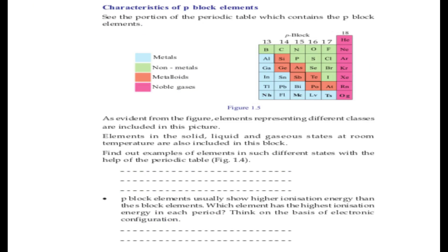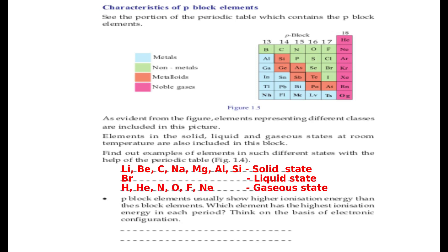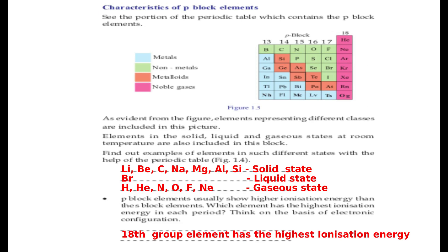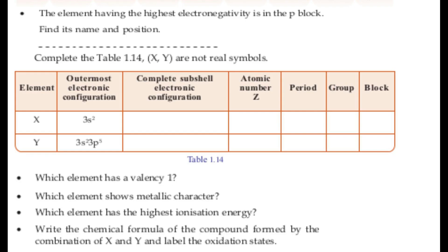The p-block includes elements that are gases at room temperature as well. P-block elements usually show higher ionization energy than s-block elements. The element having the highest electronegativity is in the p-block. Let us complete the table to find its name and position.